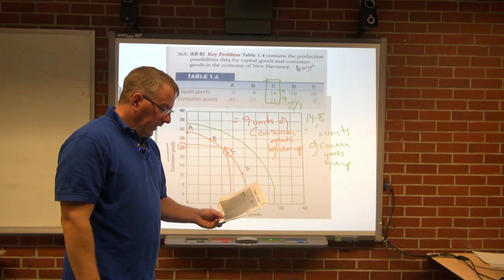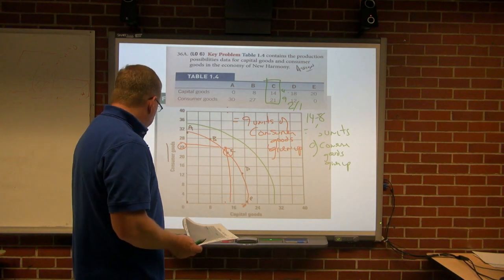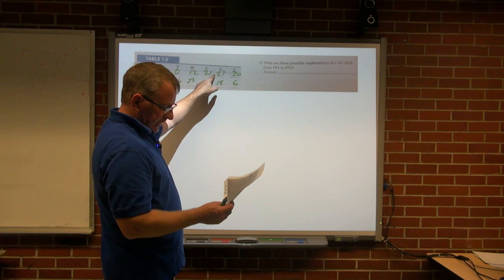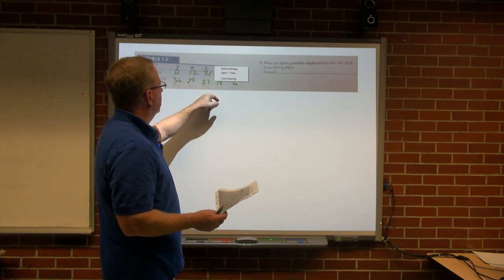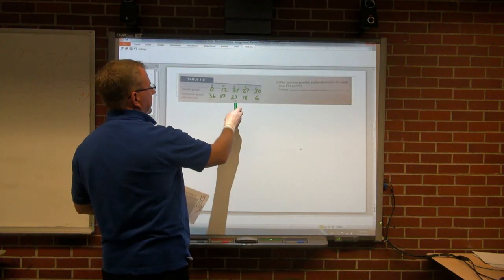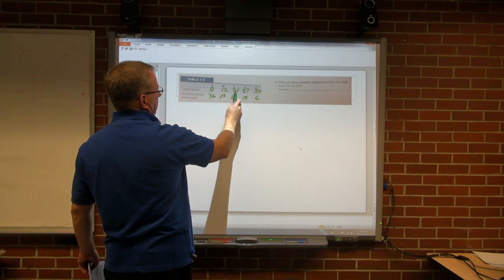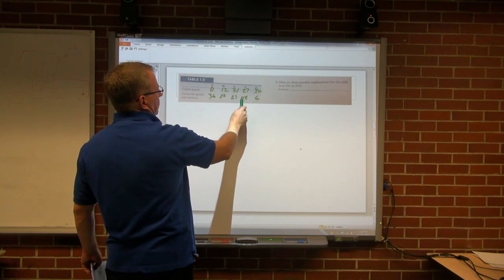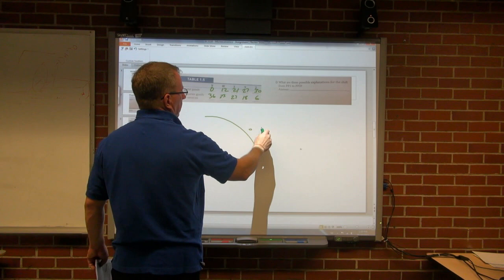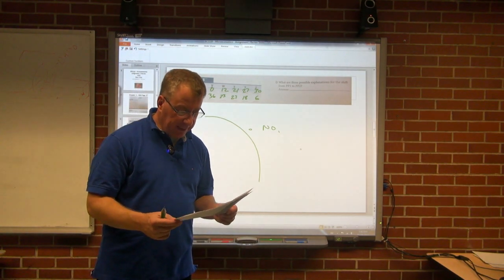The final question: as a result of economic growth, can New Harmony produce 24 capital goods and 26 consumer goods? Looking at our table, 24 falls between 21 and 27 in terms of capital goods. We ask ourselves, can we produce 24 and 26? We notice 24 is about halfway between 21 and 27. But 26 - is it halfway between 27 and 18? No. So this combination falls outside the production possibilities curve. The answer is no - we cannot produce that combination. Our production possibilities curve is still not far enough out. That's that very first question.